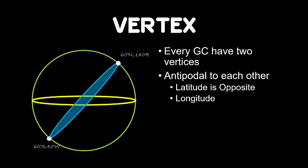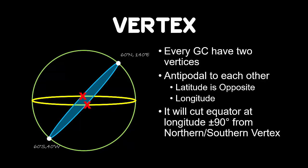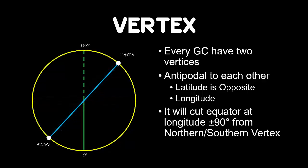The other properties of great circle that have vertices that we need to understand: it will cut equator at longitude plus minus 90 degrees from northern and southern vertex. The red crosses represent the position where the great circle cuts the equator. If we look at the diagram from the top, 90 degrees from the vertices should look like this. The angle from prime meridian to the northern vertex is 140 degrees. We need to find this angle.